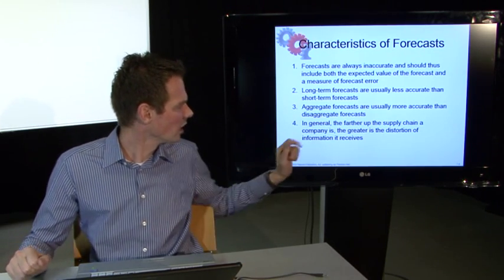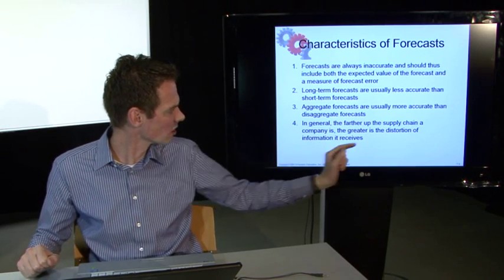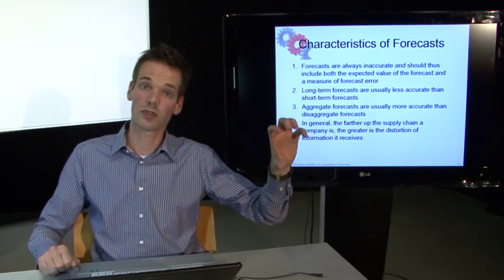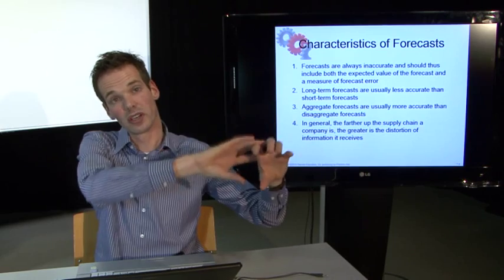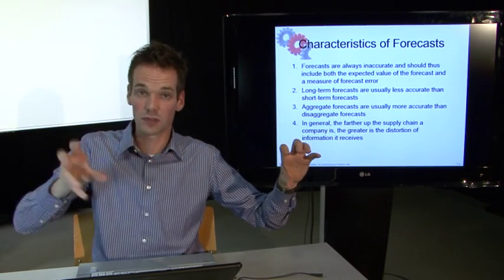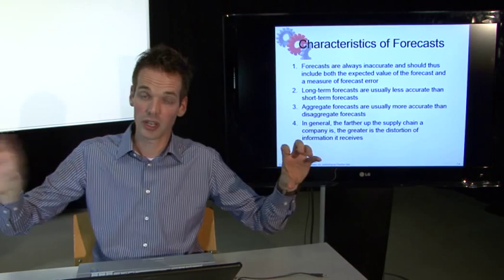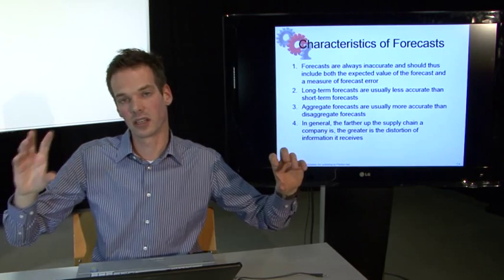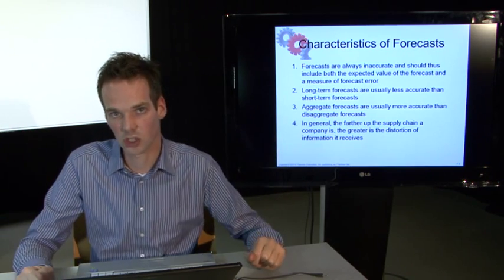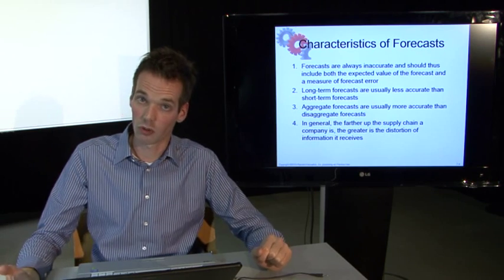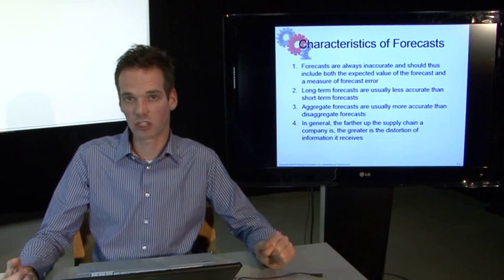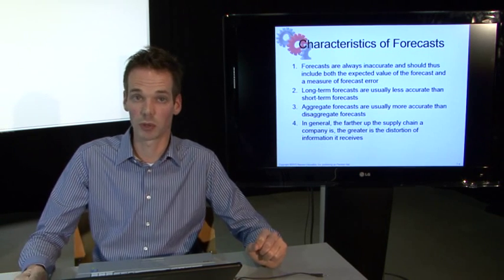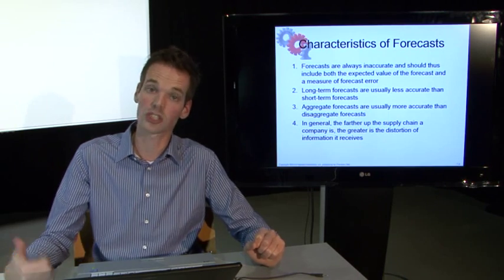In general, the farther up the supply chain a company is, the greater the distortion of information it receives. As information comes from the consumer all the way to the retailer, distributor, manufacturer to the supplier, when you are farther up the supply chain, the information will get distorted along the way. And it's the role of the supply chain manager to decrease that information distortion to increase the probability that the forecast is accurate.